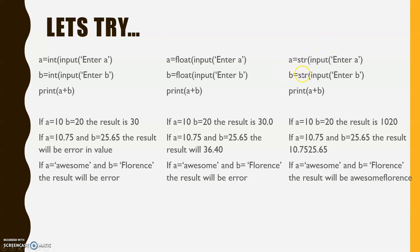For string input using str: if we give a = 10 and b = 20, it will not perform addition. Because the values are in string form, plus is used as a concatenation operator, so the result will be '1020', not 30. If we give a = 10.75 and b = 25.65, the result will be '10.7525.65' — it combines both values. And if we give a = 'awesome' and b = 'Florence', the result will be 'awesomeFlorence'. String always combines results; it does not add them.